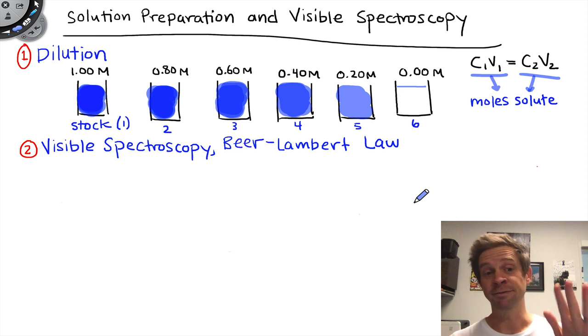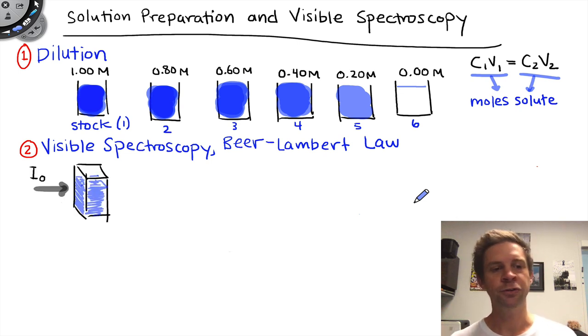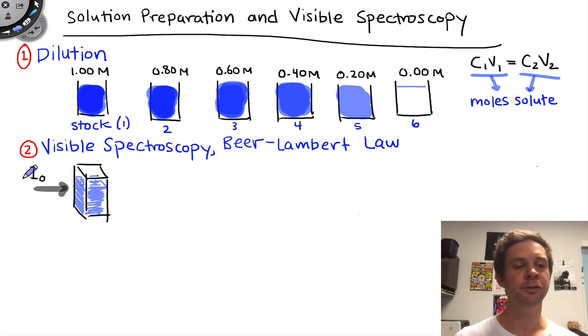A visible spectroscopy experiment involves the following situation. We start with a solution, say this is one of the six solutions from above, and we put it in what's called a cuvette. That cuvette goes into a device called a spectrometer or spectrophotometer that does the following. It impinges some input light on the sample with some intensity I0, and then it measures the output light after the light beam has passed through the sample at a certain distance, and that output light intensity is measured as I.